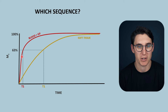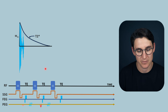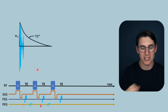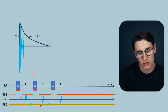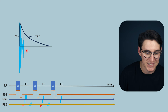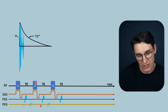The ideal sequence for this is a gradient recalled echo sequence. Gradient echo sequences have the advantage of being able to rapidly sample tissue with short TEs and short TRs to get a very heavily T1-weighted image. In this sequence specifically, we're using a spoiler gradient, so what we've essentially created is an incoherent gradient echo image. We don't have that stimulated echo providing signal here. We've got a T1-weighted image with a short TR and a short TE.